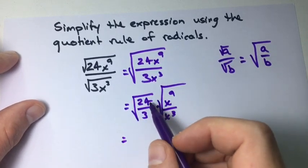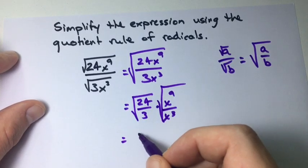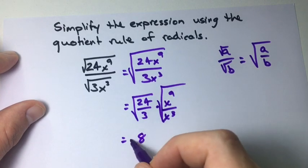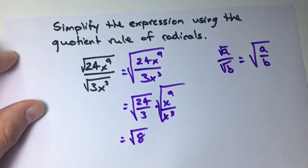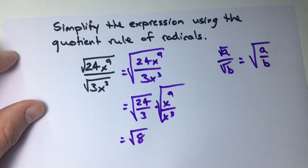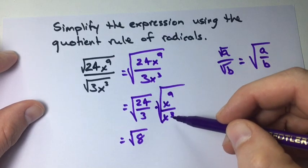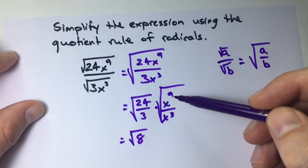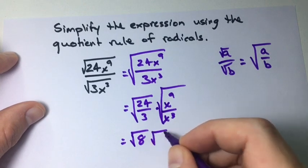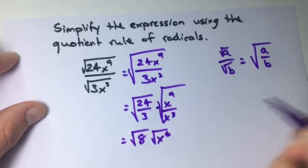Well we know 24 over 3 equals 8. And we know x to the power of 9 over x to the power of 3. Knowing our rules of exponents, 9 minus 3 gives us x to the 6.